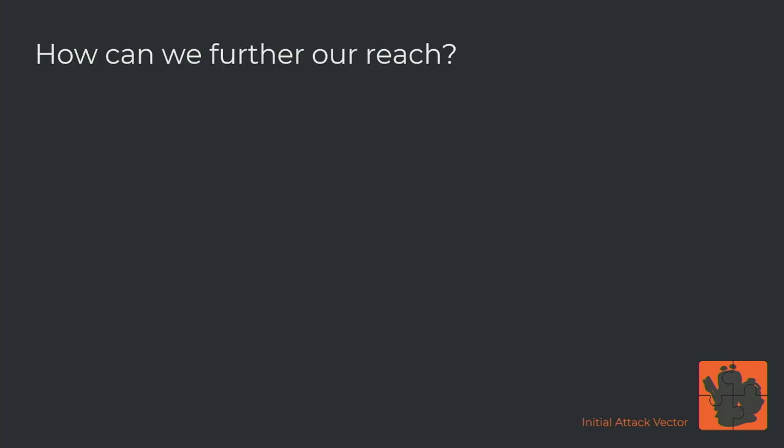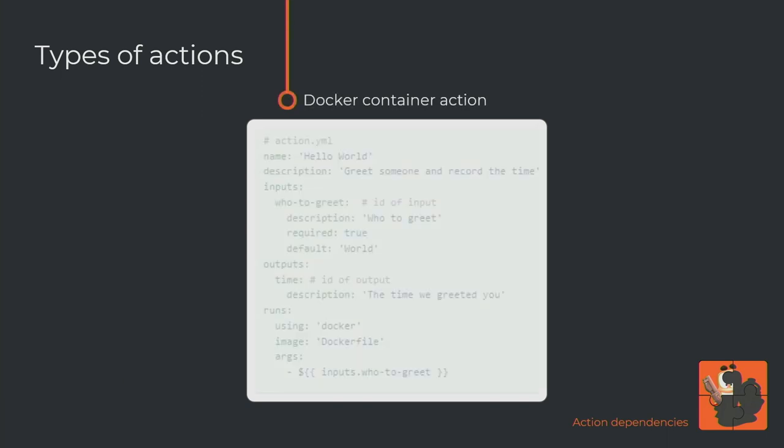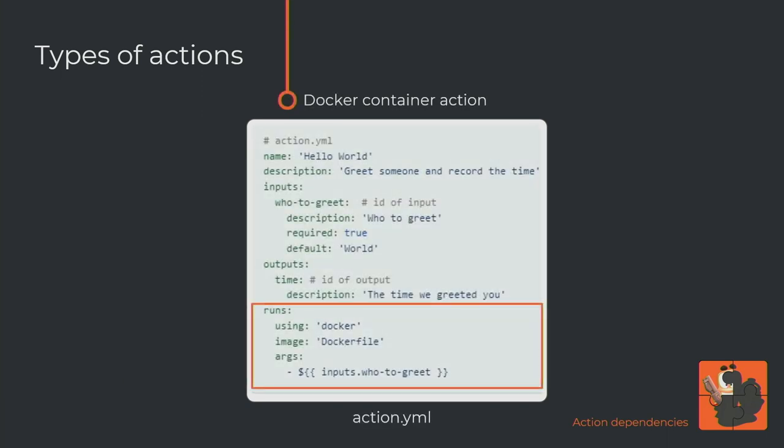Now, how can we further our attack? We just understood how to compromise a single repository, but we want to compromise infinite repositories. Next we'll talk about action dependencies. There are three types of actions. The first is a Docker action - it uses a Dockerfile or a Docker image. What you're seeing is the action YAML file - a file that sits at the root of the repository defining what the action actually does, like the main function of the action.